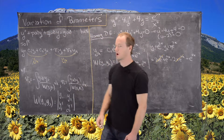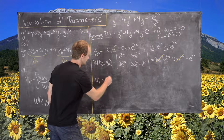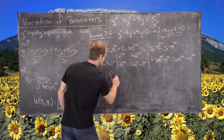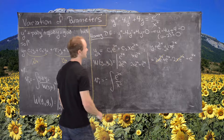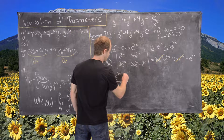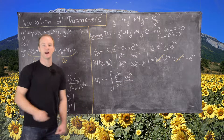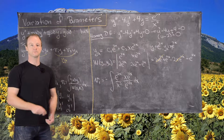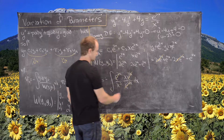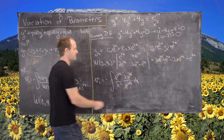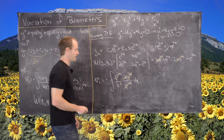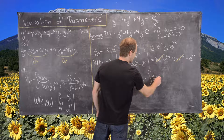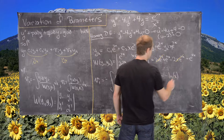Now we calculate v1 and v2. v1 is the negative antiderivative of g of x times y2 over the Wronskian: that is the antiderivative of e to the 2x over x squared times x e to the 2x, all divided by e to the 4x. The e to the 2x terms in the numerator cancel the e to the 4x in the denominator, and one factor of x cancels, leaving negative the antiderivative of 1 over x dx, which equals negative natural log of x.